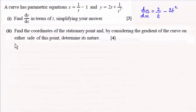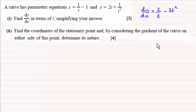Hi there. Now if you'd like to try part two of this question, I'll just give you a moment to pause the video. But just to remind you, the answer to part one that we found in the previous video was dy/dx equals 2/t minus 2t².